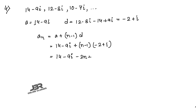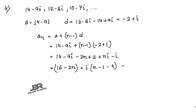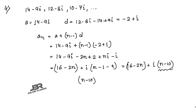The nth term simplifies to: a_n = (16−2n) + (n−10)i. For the term to be purely real, the imaginary part must equal zero: n − 10 = 0, so n = 10. The 10th term is purely real.